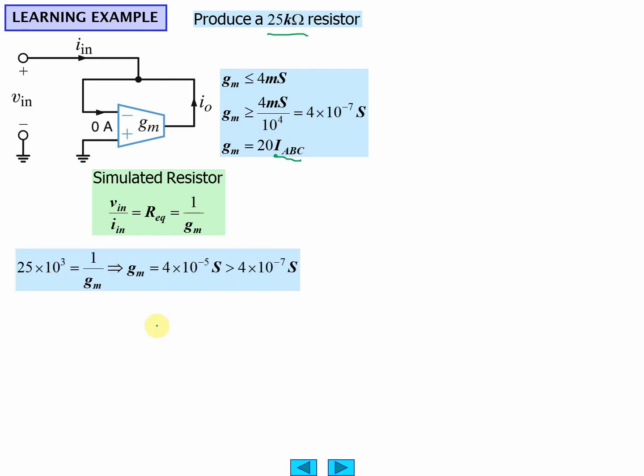Well, GM has to equal the reciprocal of 25,000 and it's greater than the minimum, which is fine. It's less than the maximum, here's the maximum. And the current then would be this value divided by 20, or 2 microamps to program it.